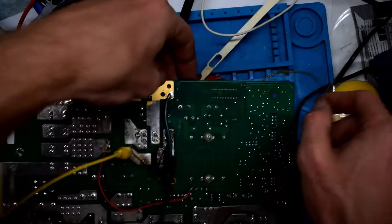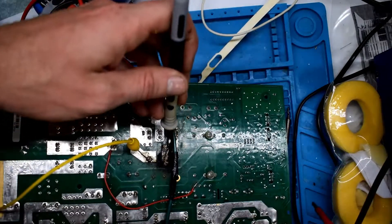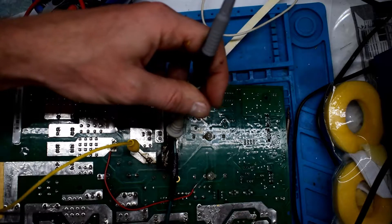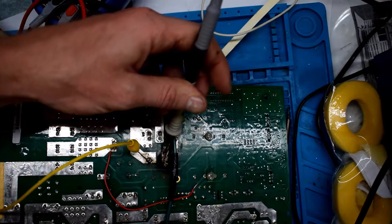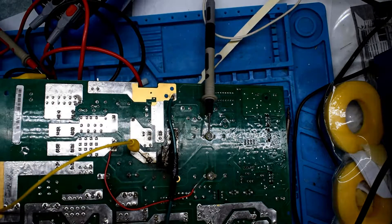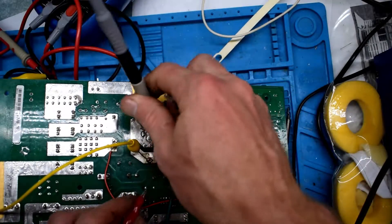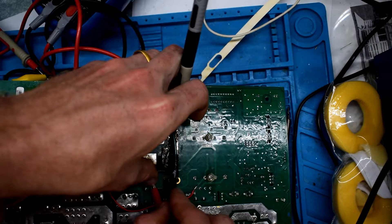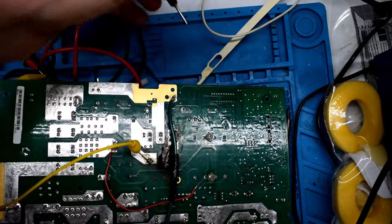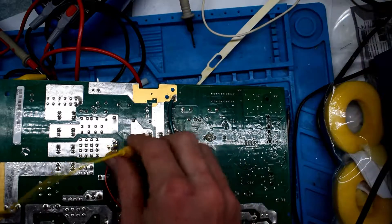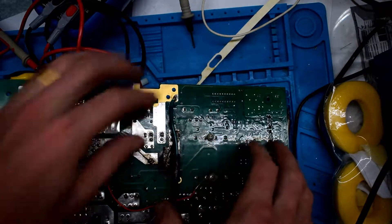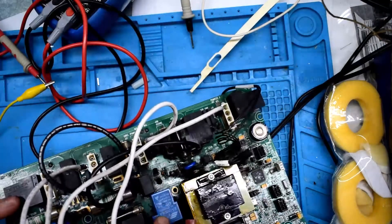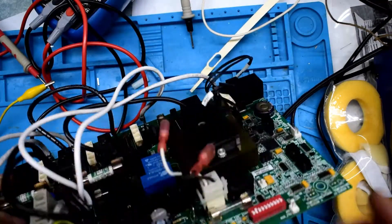So here's the relay and we should have continuity here when 12 volts is connected between here and here. You can hear the relay going but it's not working, so let's desolder this relay right here.